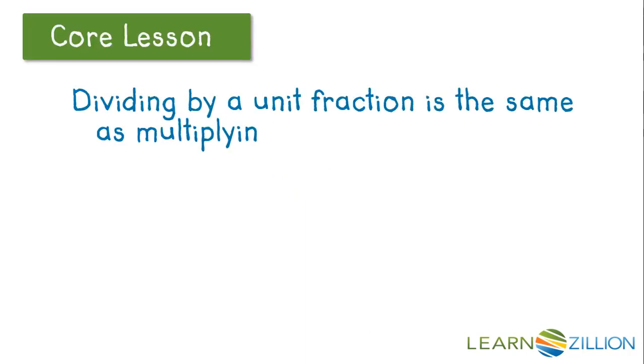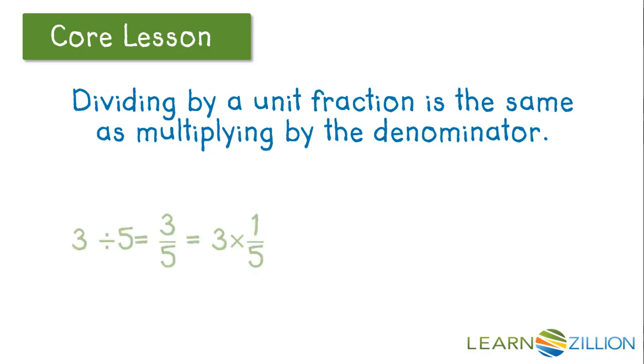Dividing by a unit fraction is the same as multiplying by the denominator. If we take 3 and divide it by 5, we end up with 3 fifths. That's the same as taking 3 and multiplying it times 1 fifth. Or in repeated addition, that would be 1 fifth plus 1 fifth plus 1 fifth would equal 3 fifths.